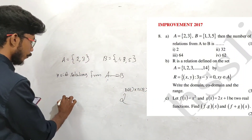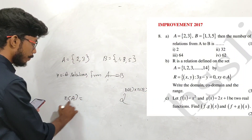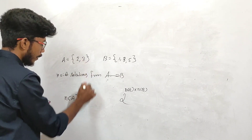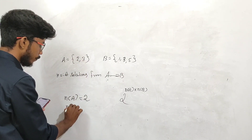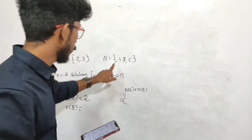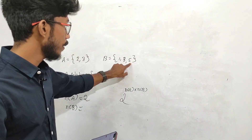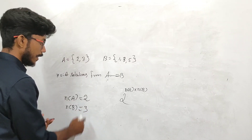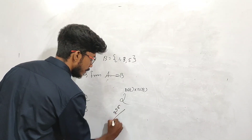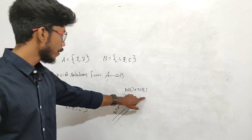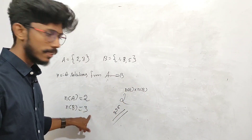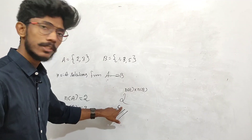Number of relations from A to B is 2 rise to N of A into N of B. What is N of A? N of A is the number of elements in A, which is 2. What is N of B? Number of elements in B is 3. That is 2 into 3, which is 6.